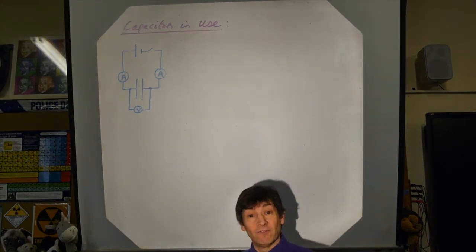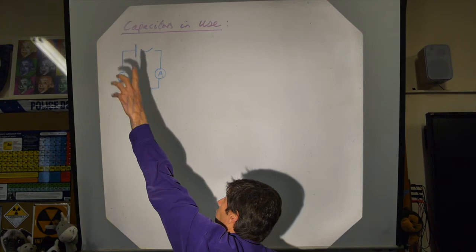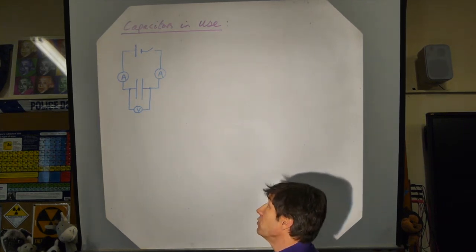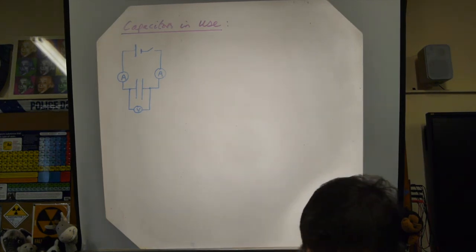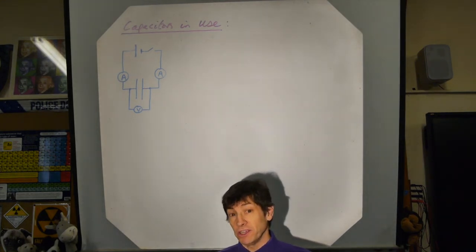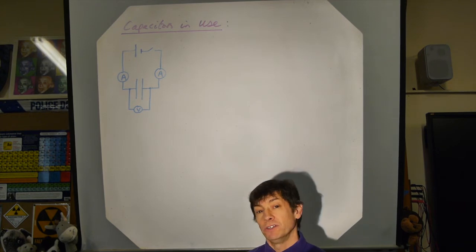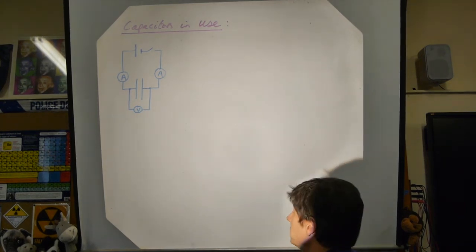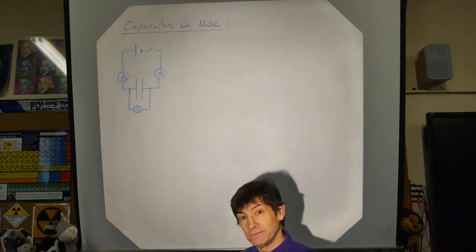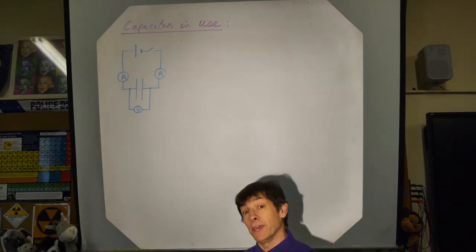Quick reminder: the wires and ammeters have no resistance, the voltmeter has infinite resistance, and the battery has zero internal resistance. Now, if you haven't seen these things before, you might say that when you turn it on the ammeters will always read zero, because the dielectric or air gap is non-conducting and there's no complete circuit. In fact, you'd be wrong.